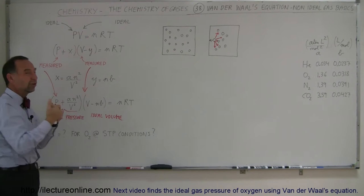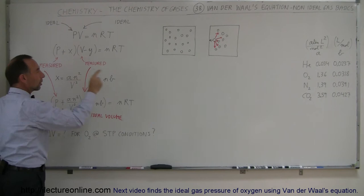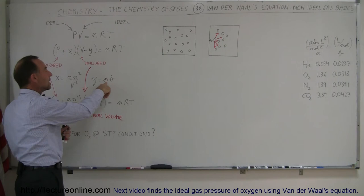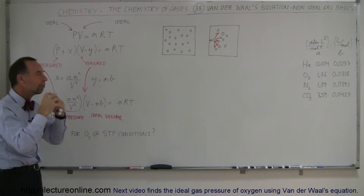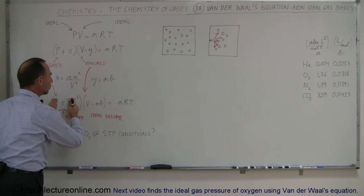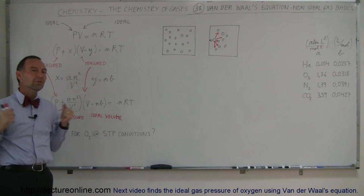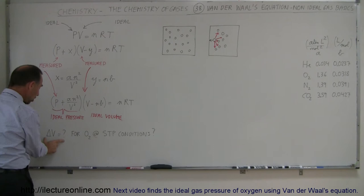They came up with constants for each gas — particular values for the volume of each molecule and the attractive force between molecules. The pressure correction term equals the constant a times the number of moles squared divided by the volume of the container squared (an²/V²). To adjust the volume, the correction is the number of moles times constant b (nb), which represents the volume occupied by the molecules. With these substituted in, the equation produces more correct pressure and volume values.